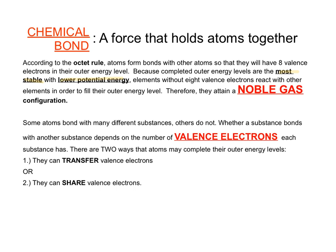There are two general ways that atoms can complete those outer energy levels: they can transfer valence electrons — one can give electrons to another — or they can share their valence electrons. Those are the two major types of bonding we're going to talk about.